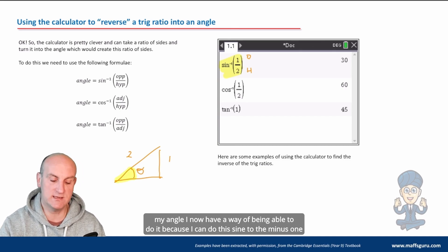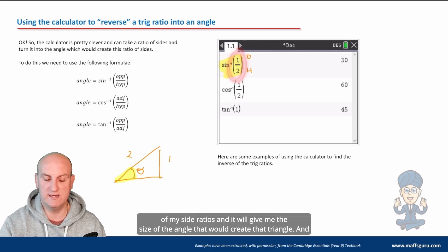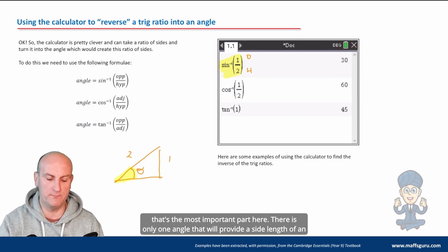So if I had that question and it wanted me to find the size of my angle, I now have a way of being able to do it. Because I can do this sine to the minus one of my side ratios. And it will give me the size of the angle that would create that triangle. And that's the most important part here.